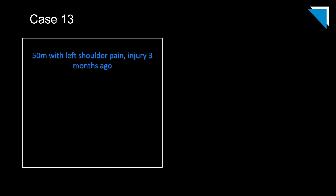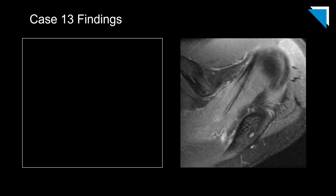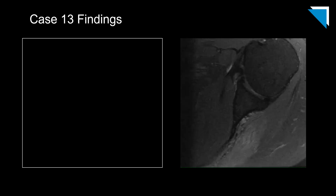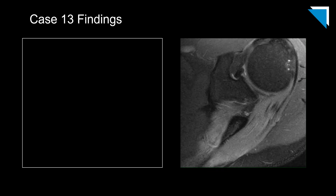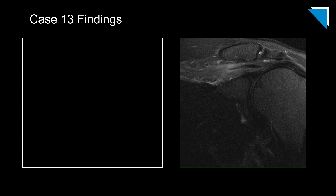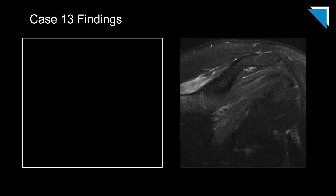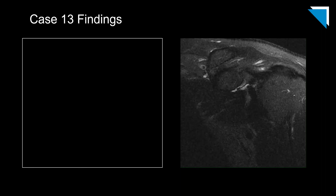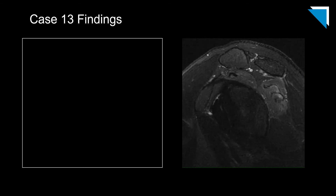Let's take a look at one more case: a 50-year-old man with left shoulder pain and an injury three months ago. These are axial fat-suppressed fluid-sensitive sequences from an MRI of the shoulder — these sequences are terrific for looking at bone marrow and soft tissue edema. I'll draw your attention to the supraspinatus and infraspinatus muscle bellies. Here are the corresponding coronal images and finally the sagittal sequence, which really demonstrates the findings beautifully.